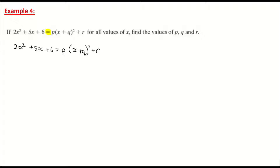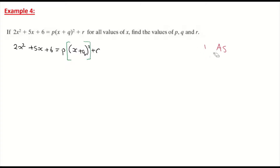On the left hand side there's nothing to do — I can't break 2x² + 5x + 6 down any further. On the right hand side there's a bit of work because I have to square the bracket and also multiply by p. Remember BIMDAS: brackets first, then indices — so I do the squared before multiplying by p. I'll bring in extra brackets around (x + q)² and do that section first, then multiply the answer by p.